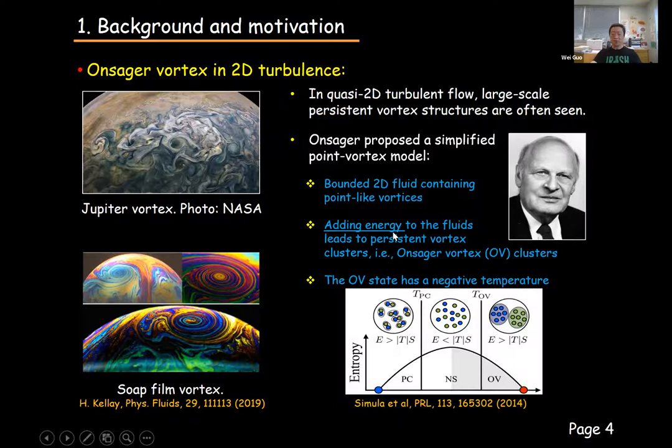The Onsager vortex state is associated with a negative temperature. This can be easily understood by checking the maximum entropy state, where the vortices are all essentially randomly distributed. In the Onsager state, the energy is higher, but since the vortices are organized into clusters, the entropy is lower. Since temperature is essentially the derivative of energy with respect to entropy, in the Onsager state the temperature is negative.